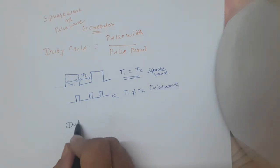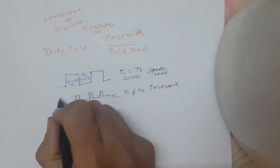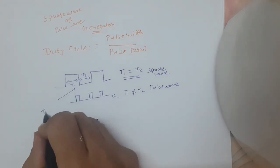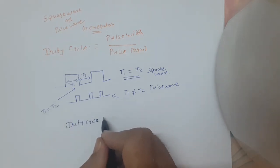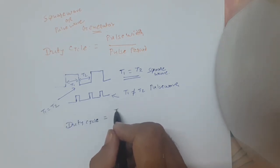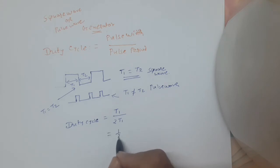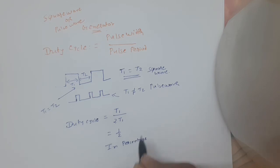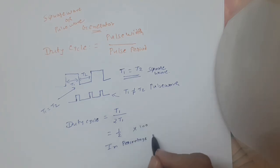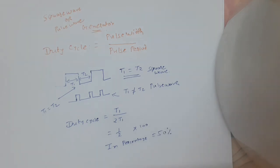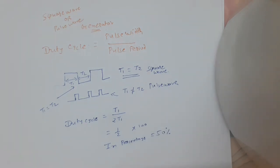For the duty cycle, if T1 is equal to T2, then duty cycle equals pulse width T1 divided by 2T1, which equals 1/2, multiplied by 100 — that is equal to 50% duty cycle. If the duty cycle is equal to 50%, then the waveform is known as a square wave.